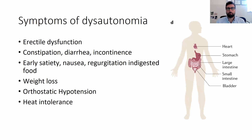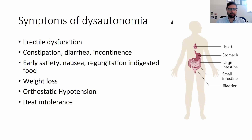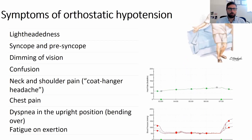In autonomic dysfunction, men may have erectile dysfunction — actually one of the first signs of amyloidosis. Patients can have severe diarrhea, incontinence, and constipation. Some cannot go on long trips because they need to be close to a bathroom. They can also experience early satiety, nausea, regurgitation of undigested food, weight loss, orthostatic hypotension, and heat intolerance. Orthostatic hypotension is a major issue — patients can lose consciousness when standing and injure themselves. Symptoms include lightheadedness, syncope, presyncope, dimming of vision, confusion, coat-hanger headache, chest pain, shortness of breath, and fatigue on exertion.